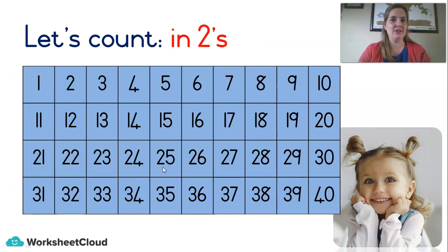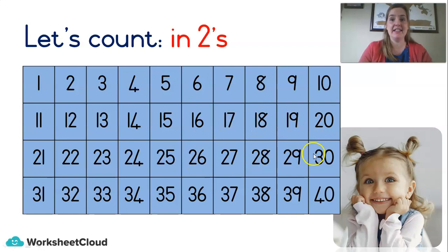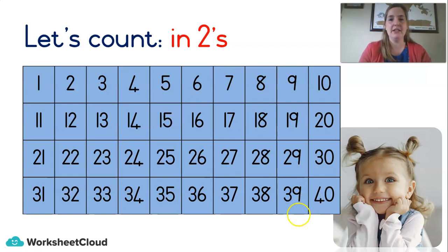Let's count in twos — it's called skip counting. We're counting all the even numbers. Let's go. [Counts in twos from 2 to 40.] Well done! That's a lot — all the way to 40 in twos.